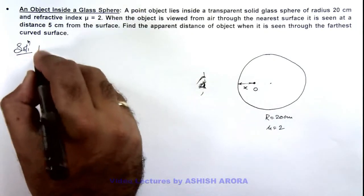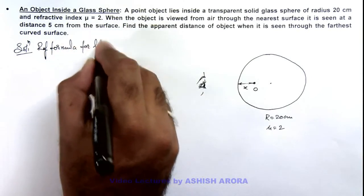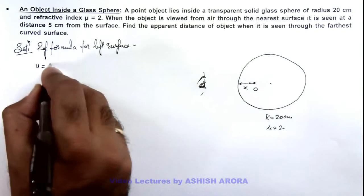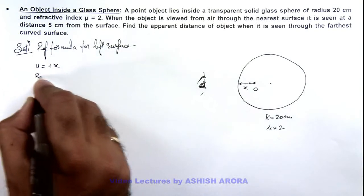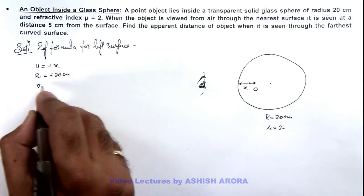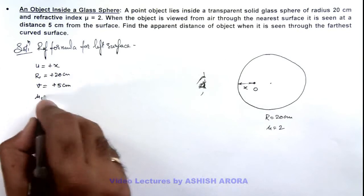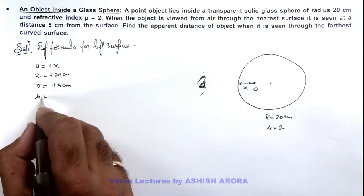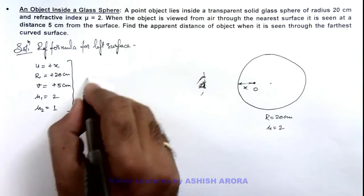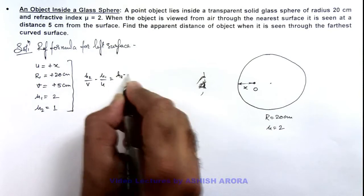Here we can use the refraction formula for the left surface. We take the object distance as plus x, radius of curvature as plus 20 centimeter, and the position of the image is given as plus 5 centimeter. The refractive index of the medium of the object, mu 1, is 2, and mu 2, where the observer is located, is 1. Using the refraction formula: mu 2 by v minus mu 1 by u equals mu 2 minus mu 1 by r.